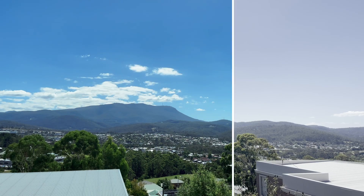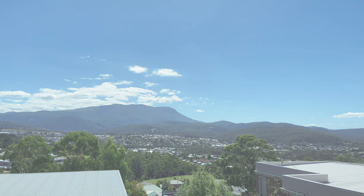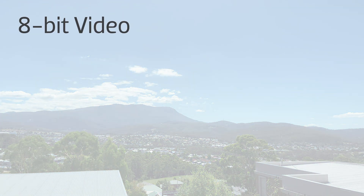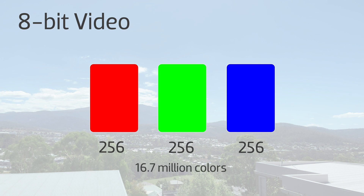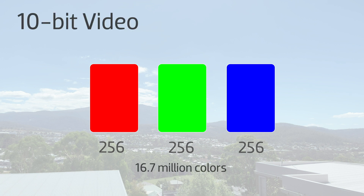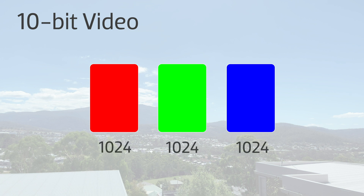First, what does 10-bit mean? 8-bit footage from previous iPhone models limits you to a color gamut of 256 shades of each red, green, and blue — or 16.7 million colors total. 10-bit video gives you 1,024 shades of each red, green, and blue, or over 1 billion different colors.